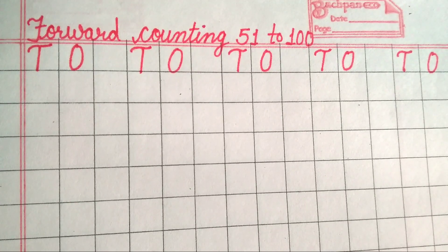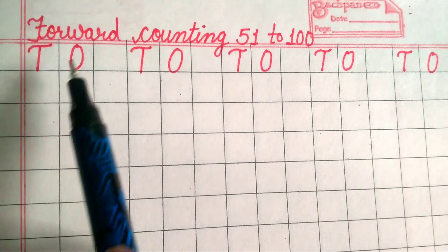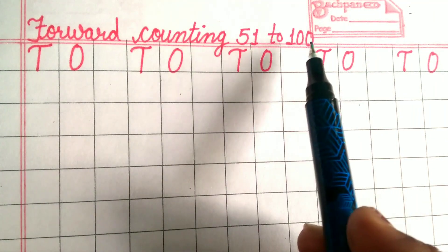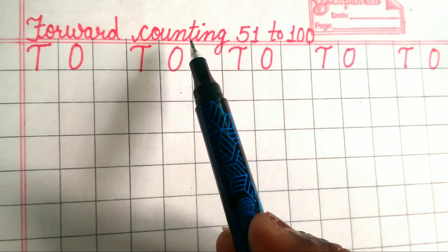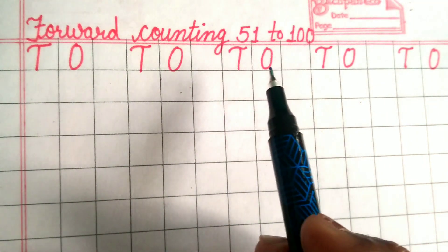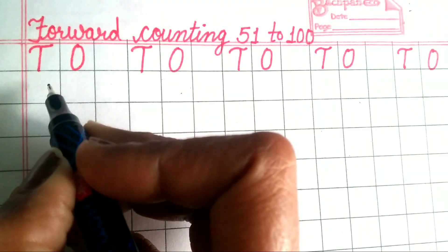Hello everyone, welcome to our channel. Today in this class we learn forward counting 51 to 100. Forward counting means Sridhi Ginti 51 to 100. Let's start.